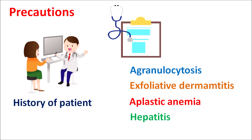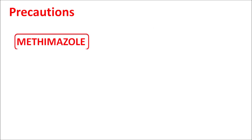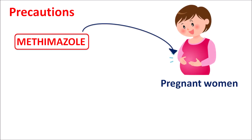Even during treatment, any development of agranulocytosis should be thoroughly checked to reduce systemic complications. Another important precaution is that methimazole produces fetal harm, so it should be carefully given to pregnant women. This effect is more pronounced in the first trimester of pregnancy when organs are being developed.